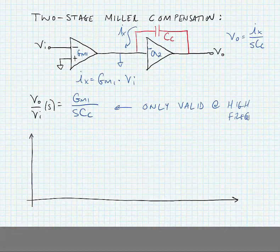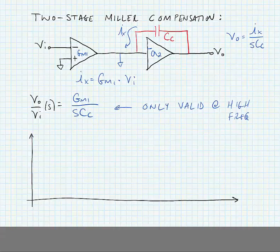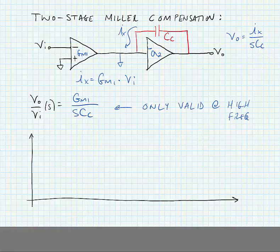What this is showing us, of course, is that we've got a frequency response with a one pole roll-off. Of course, the gain is infinite at DC in this case.